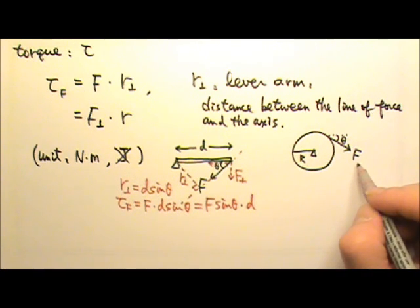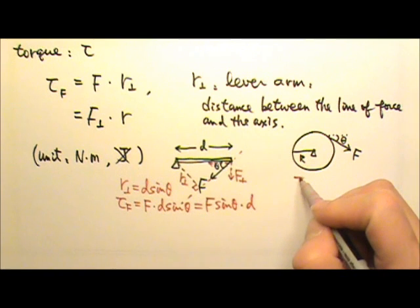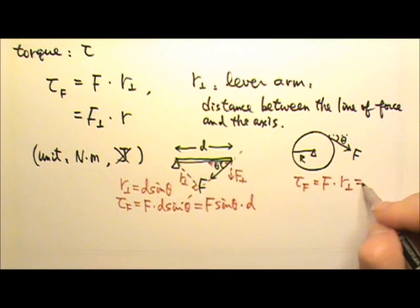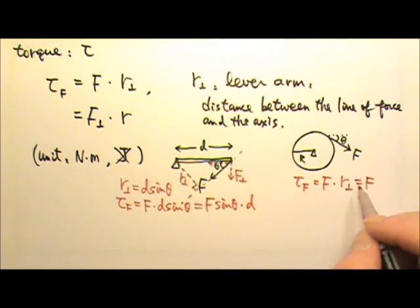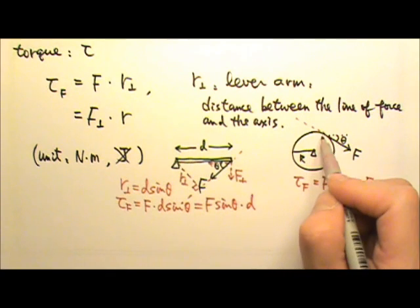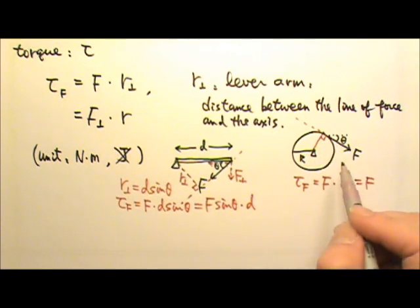And we want to find the torque produced by this force. In this case, we can use, it can be convenient to use the force times the lever arm. The force, of course, is F, and the lever arm is the distance between the line of force and this axis, so it would be the perpendicular distance.